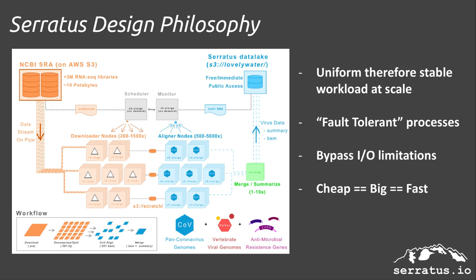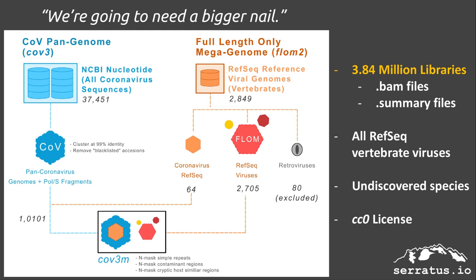Using this highly parallel approach, we've bypassed conventional networking and disk I/O limitations, allowing for ultra-fast alignment. While we originally set out for a hyperspecific search for novel coronaviruses, it became apparent early on that we could go much bigger. Our search query includes all coronavirus sequences clustered at 99% identity, and every RefSeq vertebrate virus. To date, we've aligned 3.84 million SRA libraries, in effect creating a viral index of not only every known vertebrate virus, but also their undiscovered neighbors. All of our data is released into the public domain as a 100% free and open dataset — in a few hours of browsing, you can discover your own novel virus.